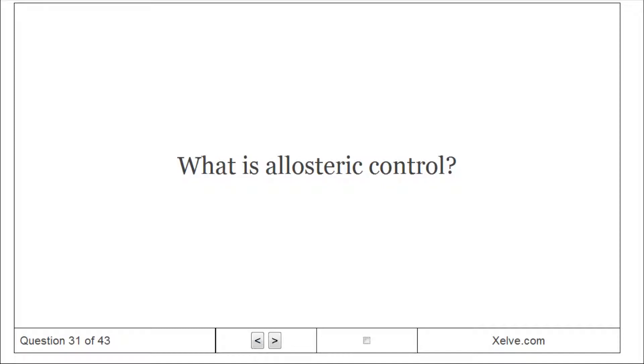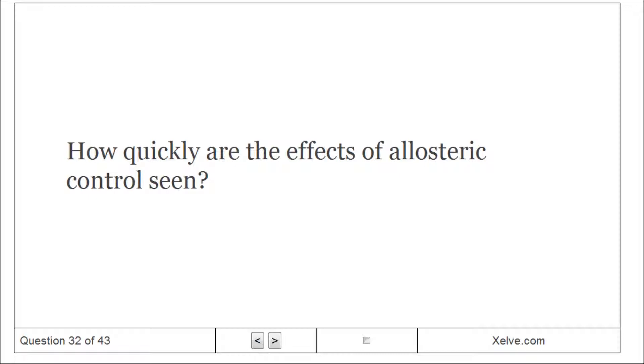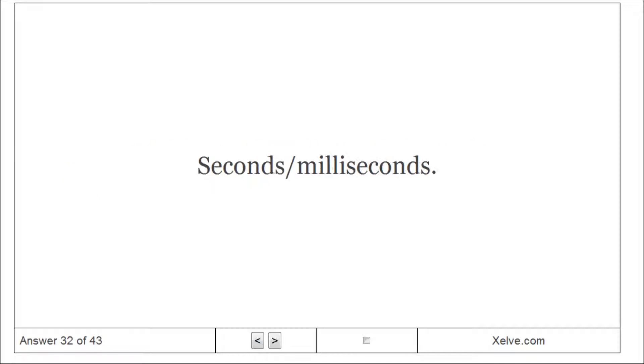What is allosteric control? Reversible non-covalent binding of effectors to enzymes resulting in activation or inhibition. How quickly are the effects of allosteric control seen? Seconds to milliseconds.